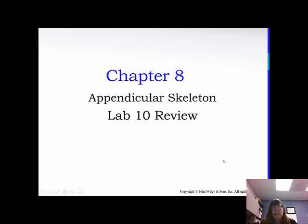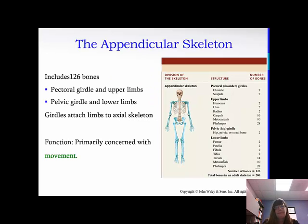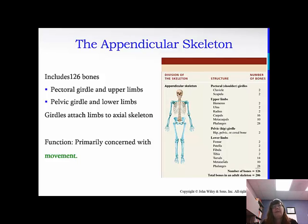So we are talking about Chapter 8 today, which is the appendicular skeleton. The appendicular skeleton is 126 bones, the left side and the right side. It includes the pectoral girdle and the upper limbs and the pelvic girdle and the lower limbs. The girdles are what attach the limbs to the axial skeleton. It's primarily concerned with movement as far as function goes. And if you look at the picture on the side, the appendicular skeleton is now highlighted in blue.